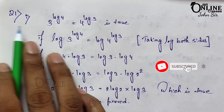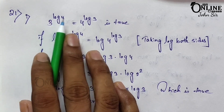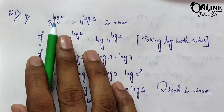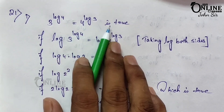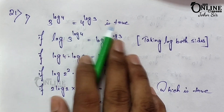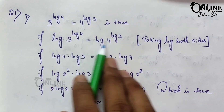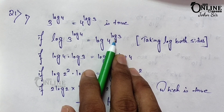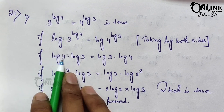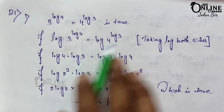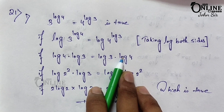Sum number 21: prove the following. The first one — 3 to the power log 4 equals 4 to the power log 3. You have to prove that this one equals this one. If this is true, then taking log on both sides: log of 3^(log4) and log of 4^(log3). By the formula, since log 4 is the power, it comes to the front: log 4 into log 3, and similarly log 3 into log 4.